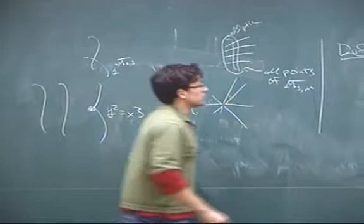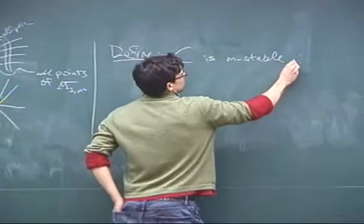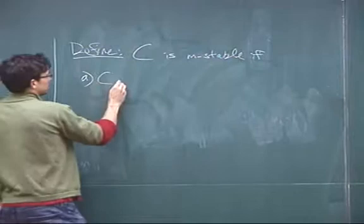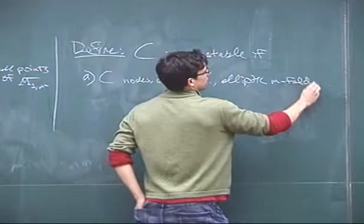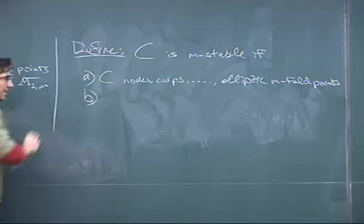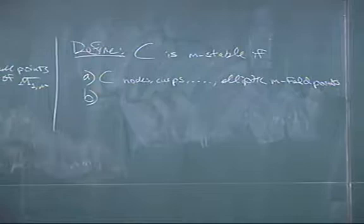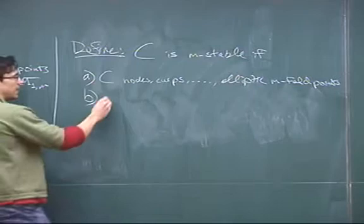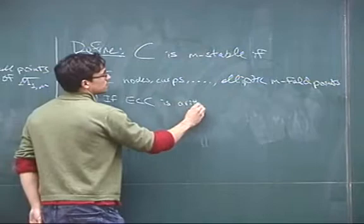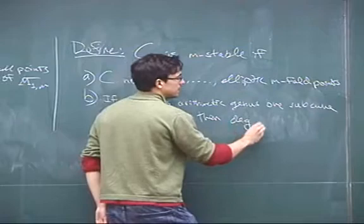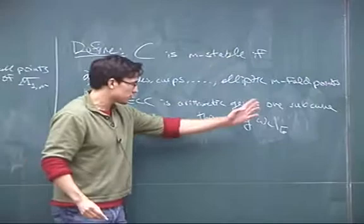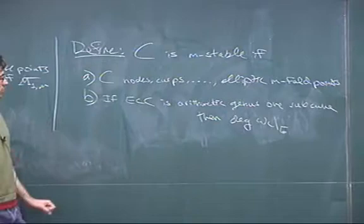We should define a stability condition. We say C is M-stable if three conditions hold: C has nodes, cusps, up through elliptic M-fold points; and if E in C is an arithmetic genus 1 subcurve, the degree of ω_C restricted to E should be greater than M. This says exactly no elliptic M-bridges, for arithmetic genus 1 subcurves — that's the key condition.